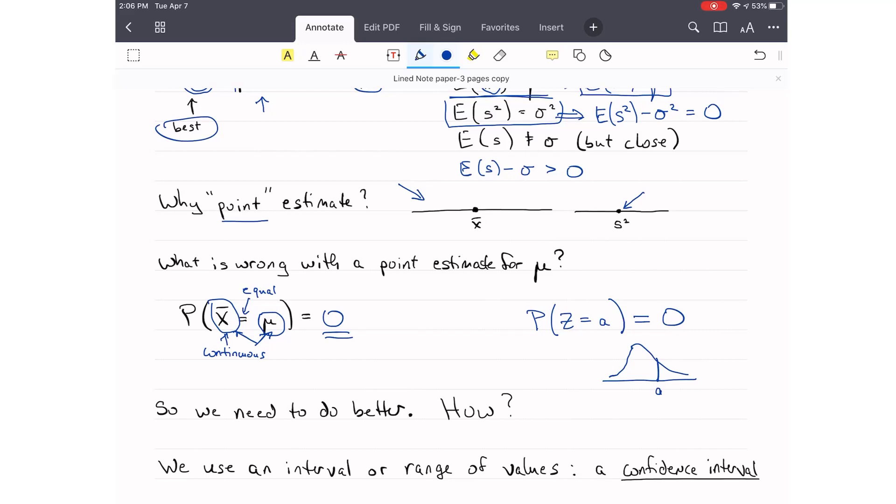Well, if I take a range of values, remember what happens if we have a range of values. Now we have probability. This probability is greater than zero. Nice.